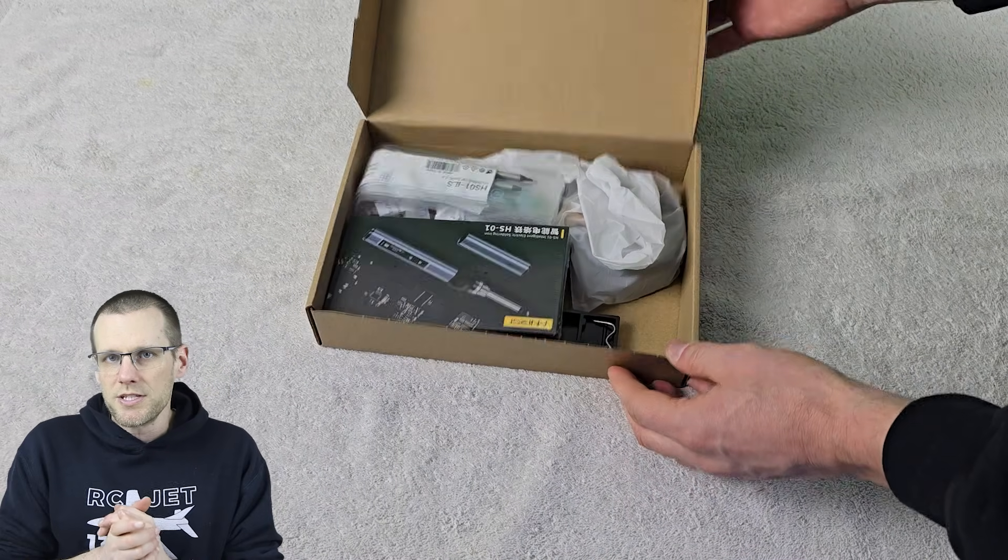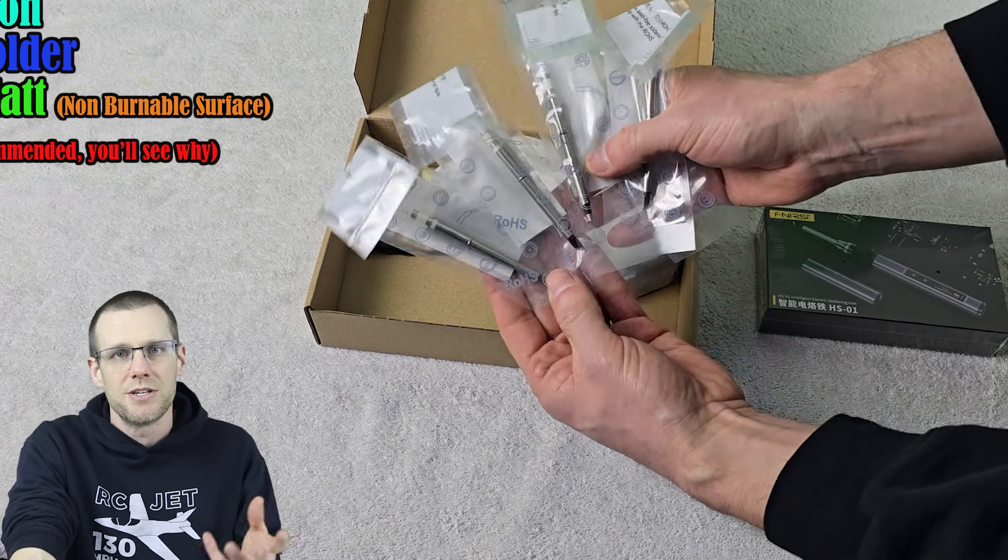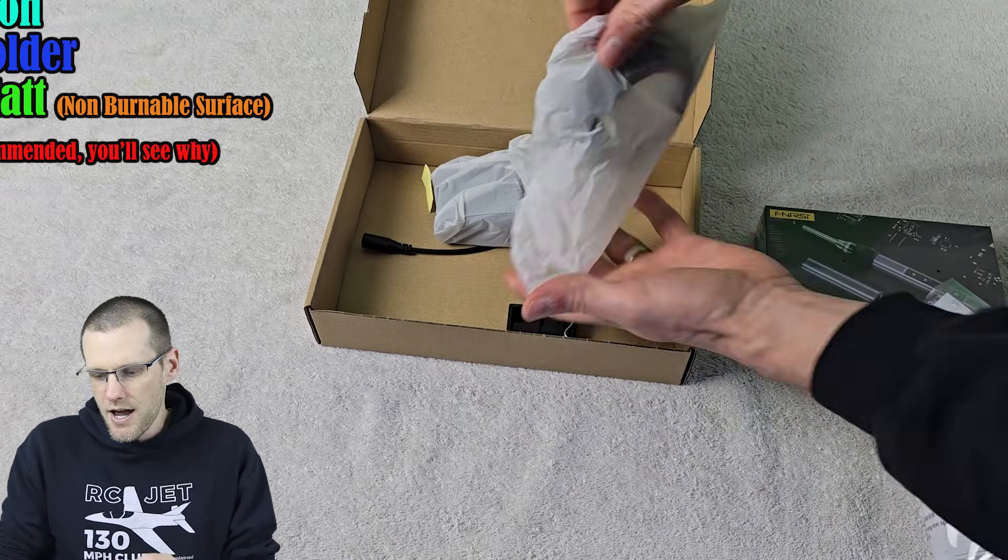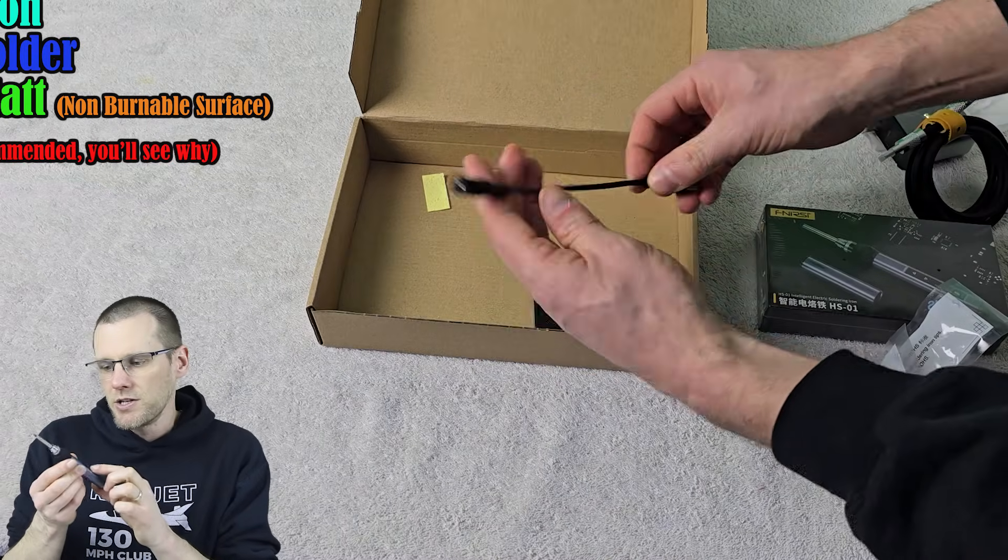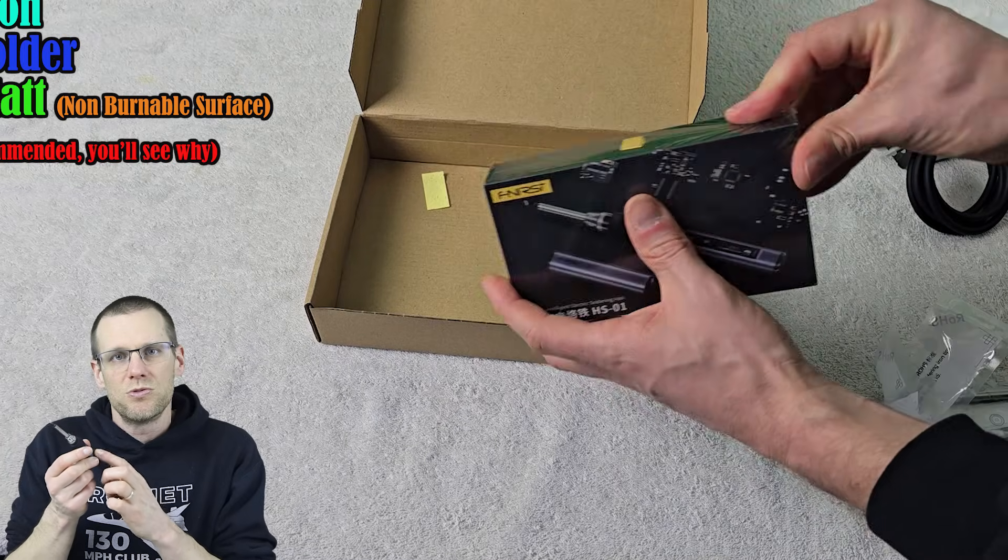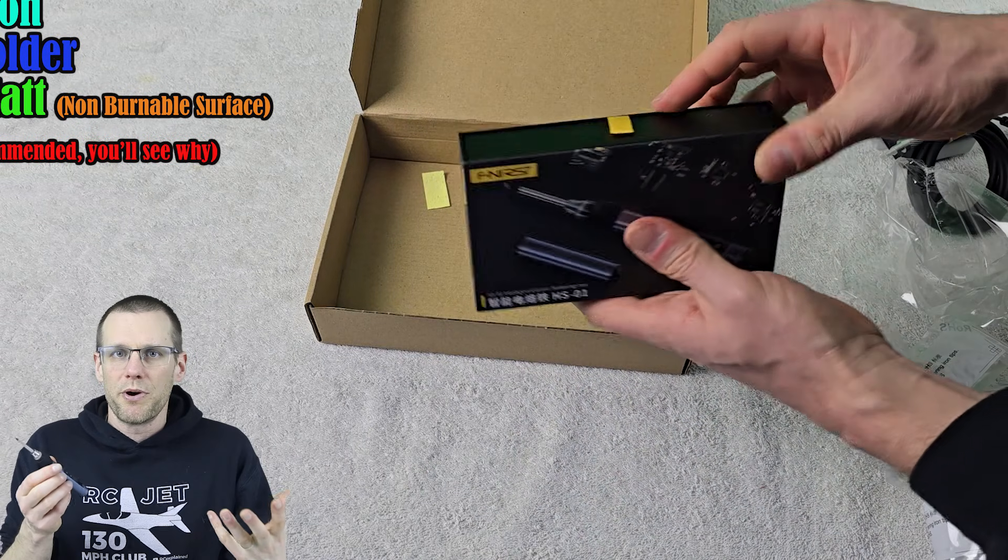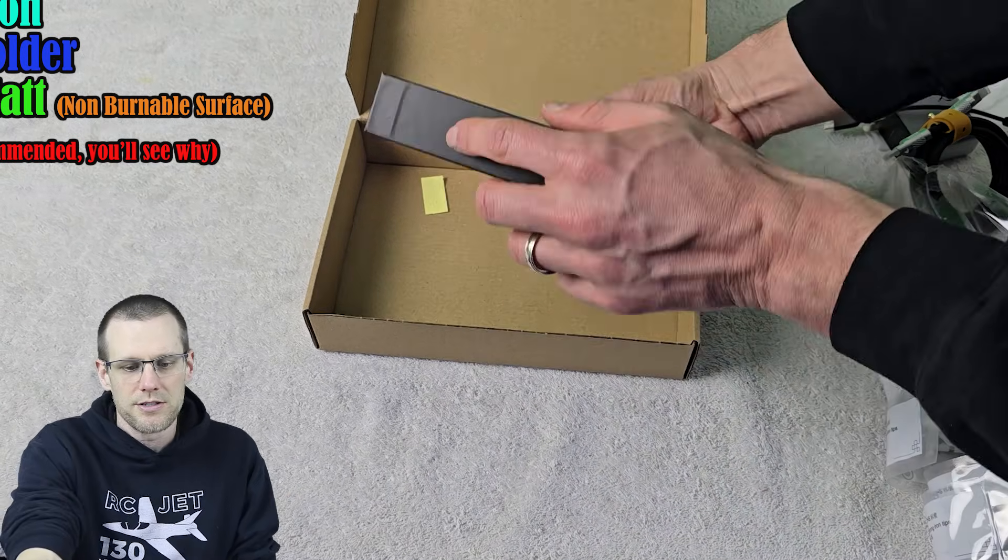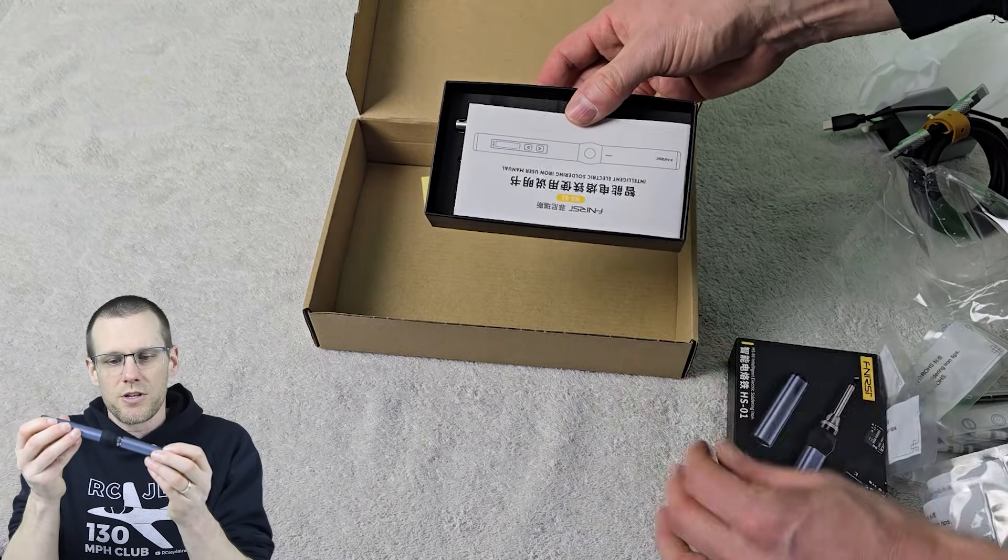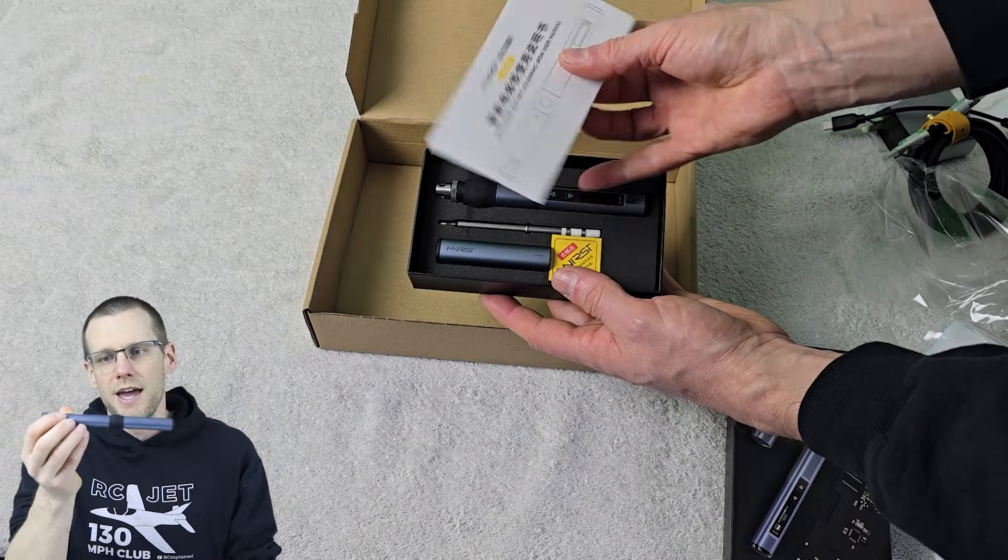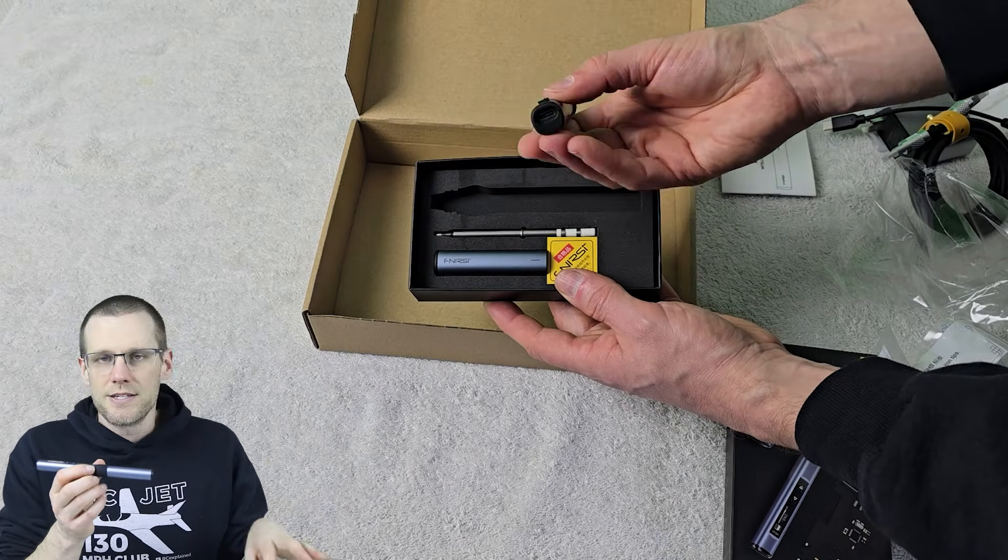What's unique about this video is that we have another product here sent by the company Finercy. This soldering iron is actually quite small. It comes with the power supply and allows you to digitally select the temperature. It comes with a bunch of different soldering tips as well as a little stand to help keep it propped up. When you want to put the soldering iron away, it comes with a little cover that you can snap into place, rotate, and there is your portable soldering iron.